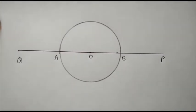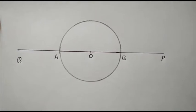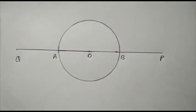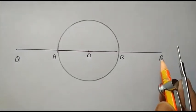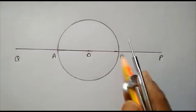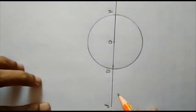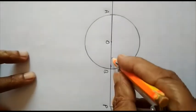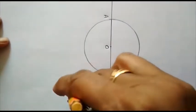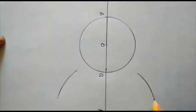I have to draw the tangents from P and Q on the given circle. So as we have discussed in the previous questions, I have to draw the tangents from P to this circle. So first of all, I will draw perpendicular bisector of OP.